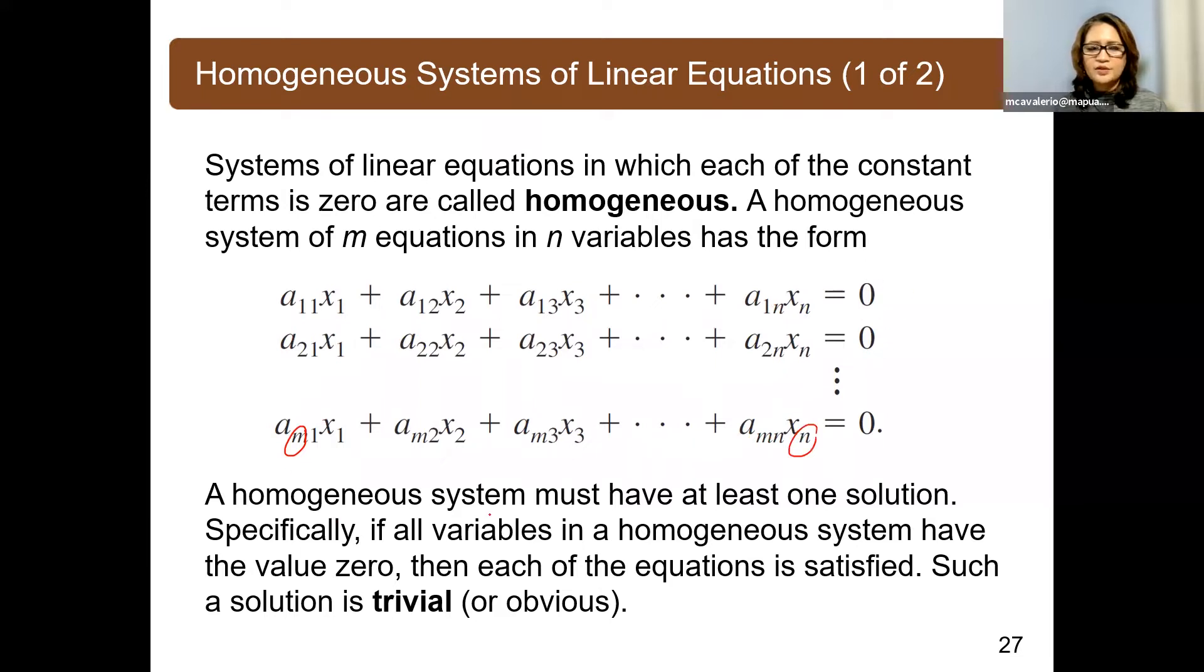A homogeneous system of equations must have at least one solution. Specifically, if all variables in a homogeneous system have the value zero, then each of the equations is satisfied. So let's say x sub 1, x sub 2, x sub 3, up to x sub n are all zeros, then it will satisfy every equation in the system. We will refer to such solution as the trivial solution.